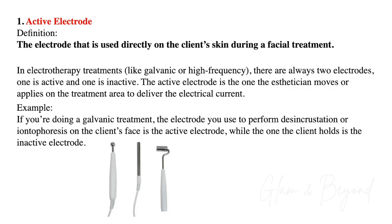Number one, what is an active electrode? The active electrode is the electrode that is used directly on the client's skin during a facial treatment. In electrotherapy treatments like galvanic or high frequency, there are always two electrodes — one is active and one is inactive. The active electrode is the one that the esthetician moves or applies on the treatment area to deliver the electrical current.